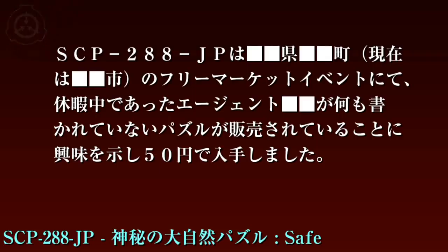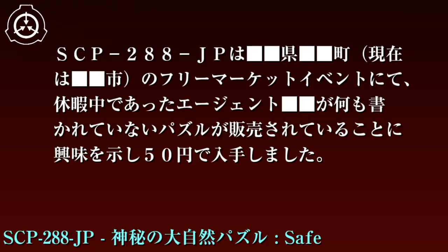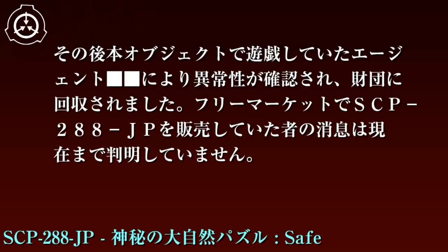収容室内は常にカメラにより異常性が発現していないことを確認してください。1日に1回、担当職員はSCP-288-JTを目視で確認し、オブジェクトの完成を妨げるようにパズルピースを動かしてください。もしSCP-288-JTの異常性が発現した際には、即座にプロトコルにより発生した異常性を取り除いてください。